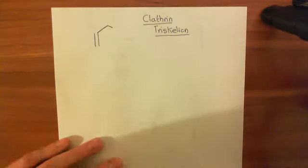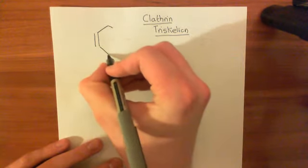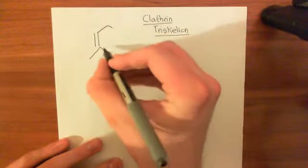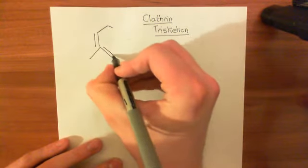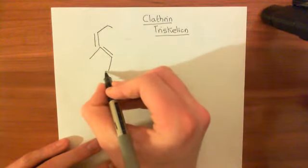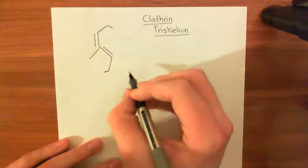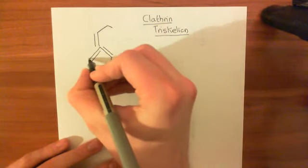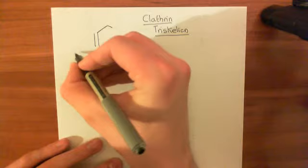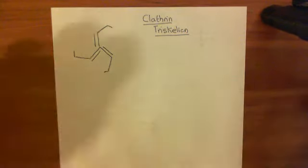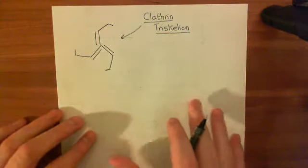Here is our clathrin. What we're going to do is put three of these things together — so here are three thighs, in effect. We're putting three heavy chains together. This one will also have its light chain, then its distal domain, and then the foot or N-terminal domain. Here's another proximal domain with its light chain associated, then the leg portion or distal domain, and finally the foot or N-terminal domain. This is the structure of a clathrin triskelion — basically a trimer of clathrin.